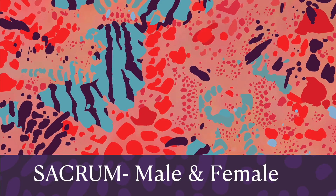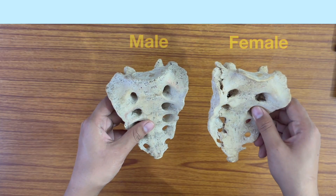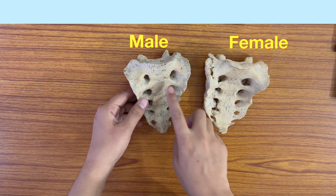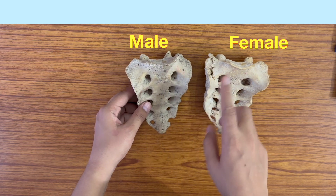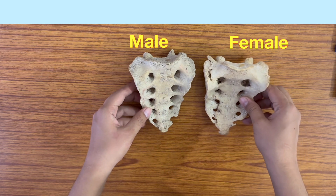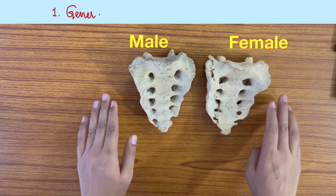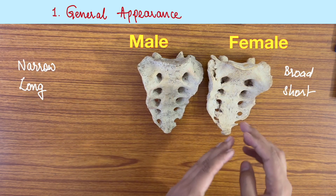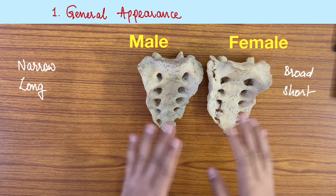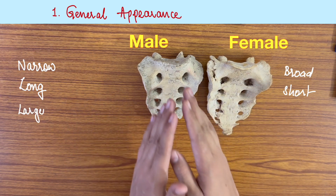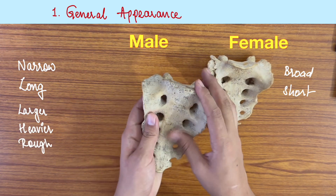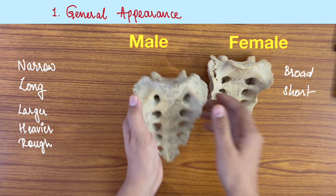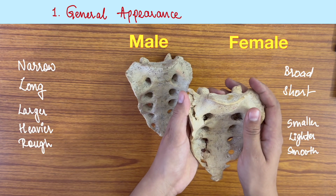Hello everyone, today we are going to see the difference between male and female sacral bone. In general, male bone muscular markings and ridges will be more prominent as compared to the female bone. Starting with the general appearance of the sacrum, the male one is narrow and longer as compared to the female, which is broad and short. Additionally, the male sacrum is larger, heavier, and rough — rough because the muscular markings are more prominent — and the female is smaller and lighter.